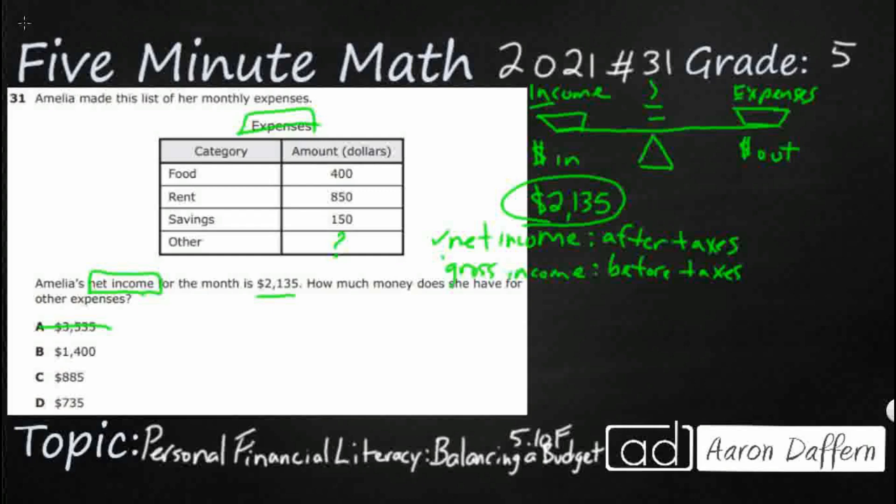$3,535. How could she have other expenses that is greater than her actual net income of $2,135? That doesn't make any sense. So we can just eliminate that right off the bat, because that's kind of silly. So she can't have other expenses that's greater than her net. She's not going to get any more money.